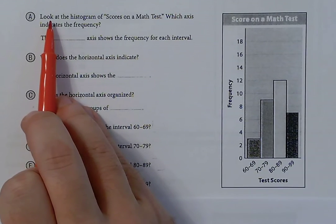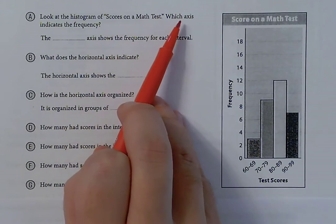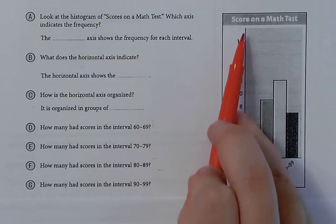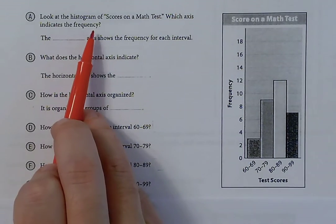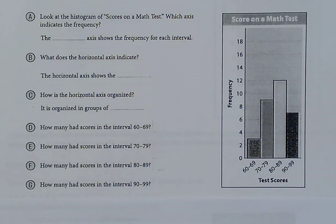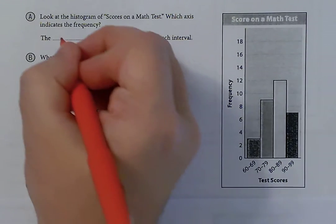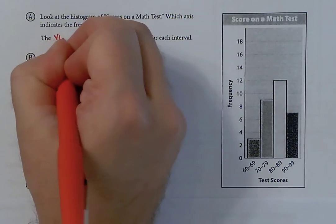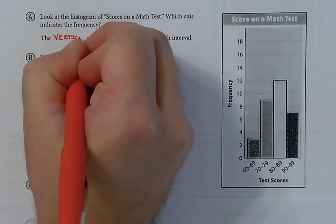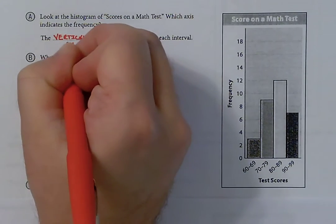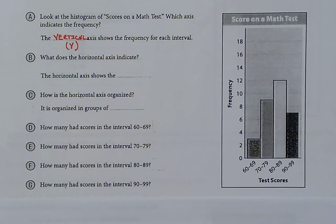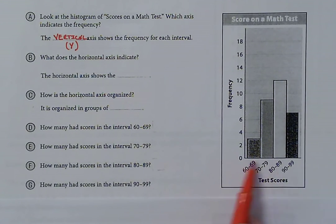For part A, look at the histogram of scores on a math test. Which axis — either the X or the Y — indicates frequency? That's going to be the Y axis, or the vertical axis, which shows the frequency for each interval. What does the horizontal axis indicate? The horizontal axis shows the test scores.